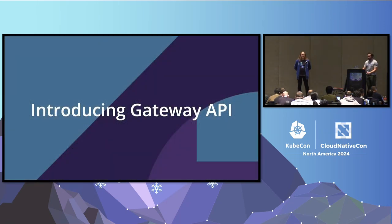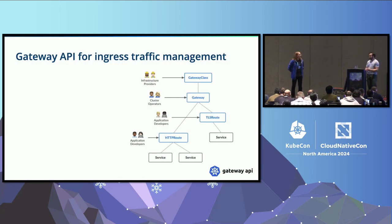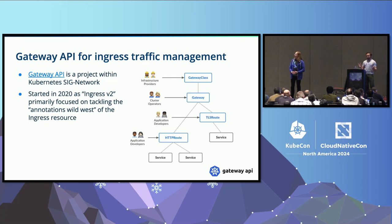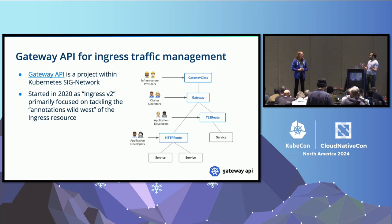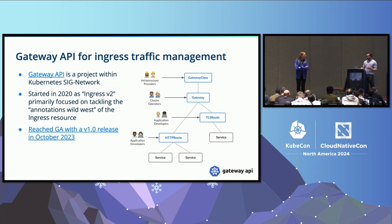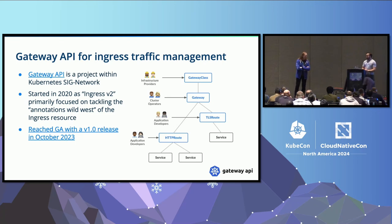Introducing Gateway API — a new API for ingress traffic management and more. It's a project within Kubernetes SIG Network, started in 2020 as ingress v2 conceptually. For various reasons the scope ended up growing beyond that, and that name felt limiting. It's primarily focused on tackling the annotations wild west of the ingress resource. We reached GA with a 1.0 release in October 2023, so it's been GA for over a year now — something you can very much use today and that people do use today.